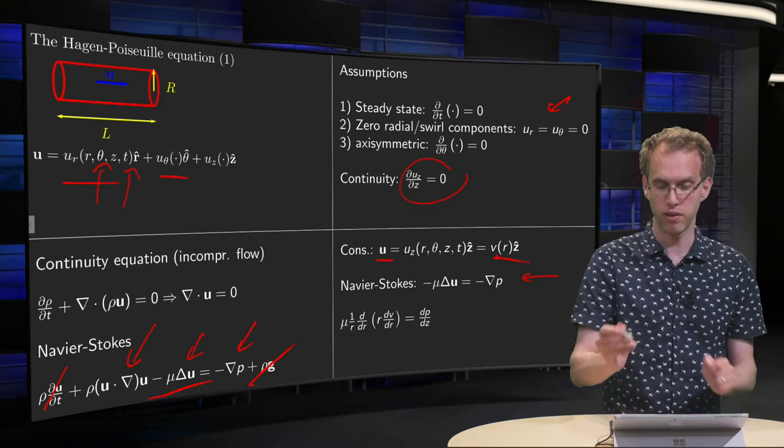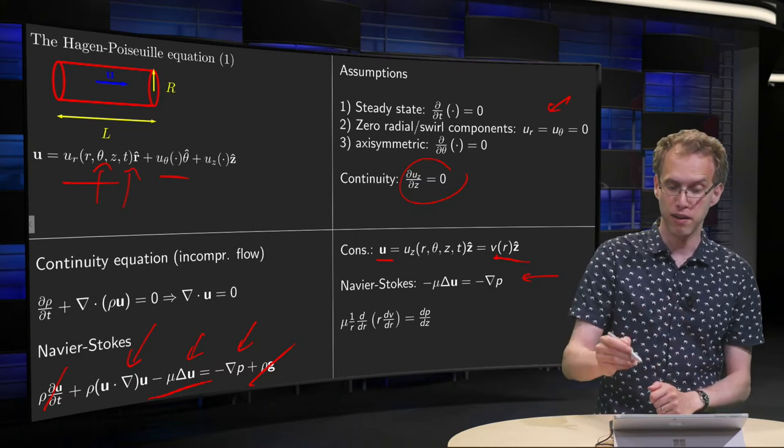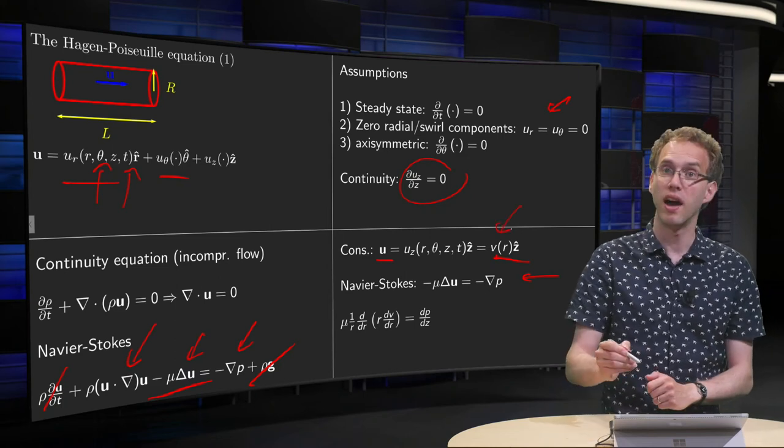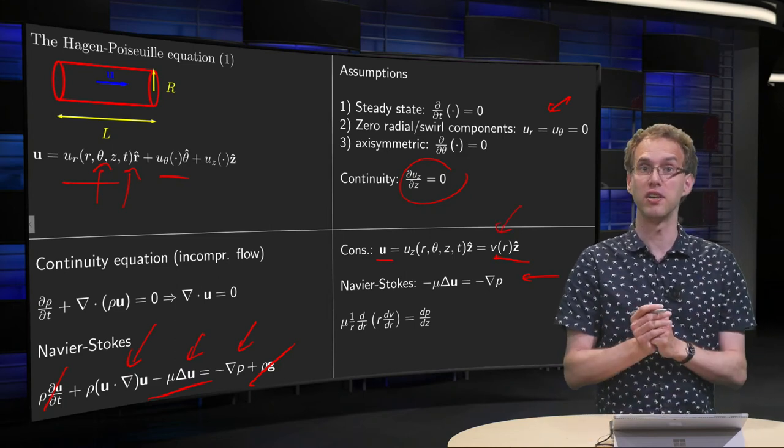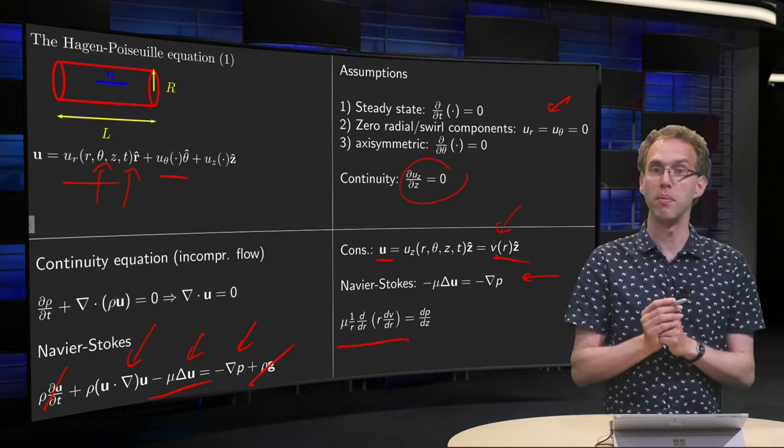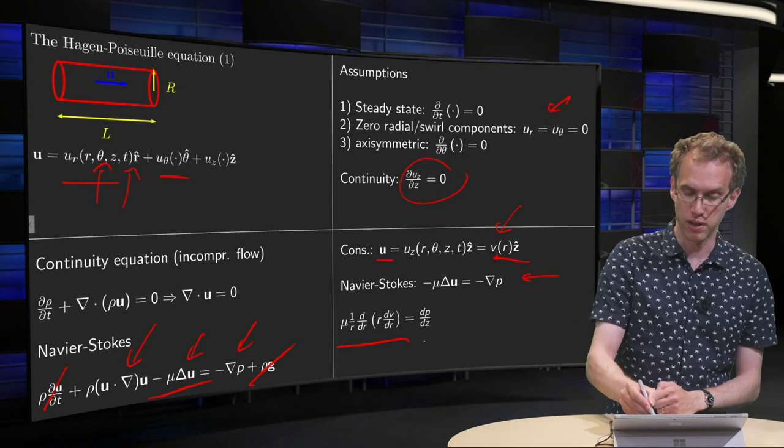And if you plug in your ansatz for your velocity field, you get your Laplacian in cylindrical coordinates. Only one term is left, this term which looks a bit horrible, and for your pressure you get dp/dz, and the minuses cancel out.